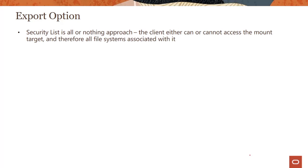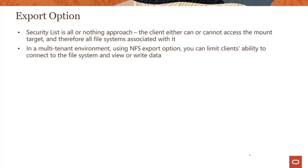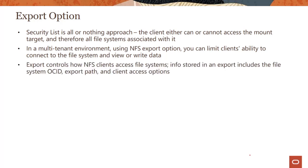Now let's look at export options. The security list is an all-or-nothing approach — the client either can or cannot access the mount target and therefore all the file systems associated with it. In a multi-tenant environment, using NFS export options, you can limit a client's ability to connect to the file system and view or write data. We'll look into this in more detail as to how this works.